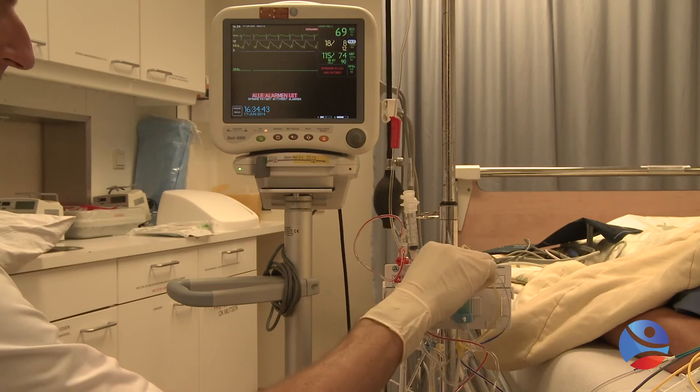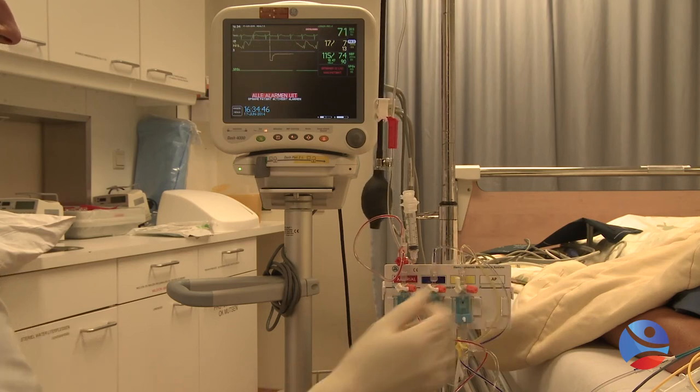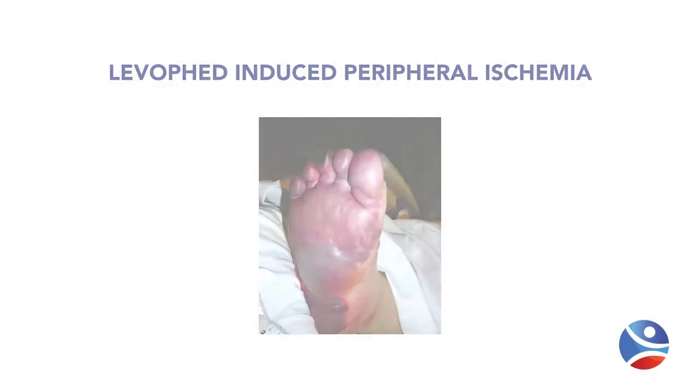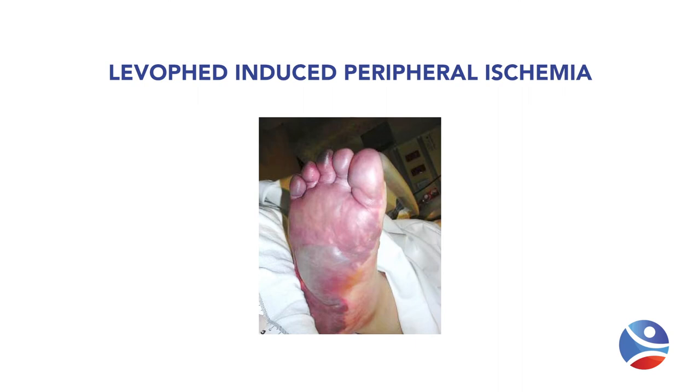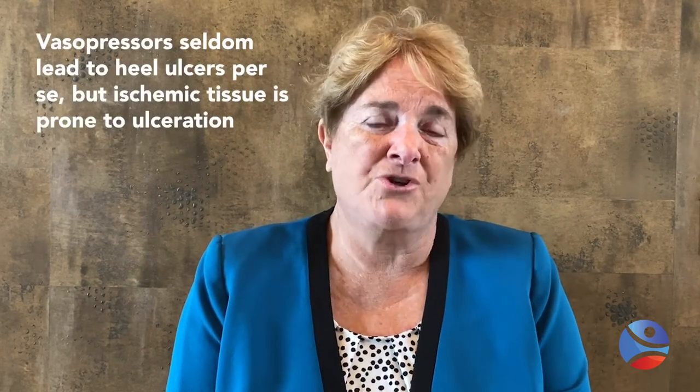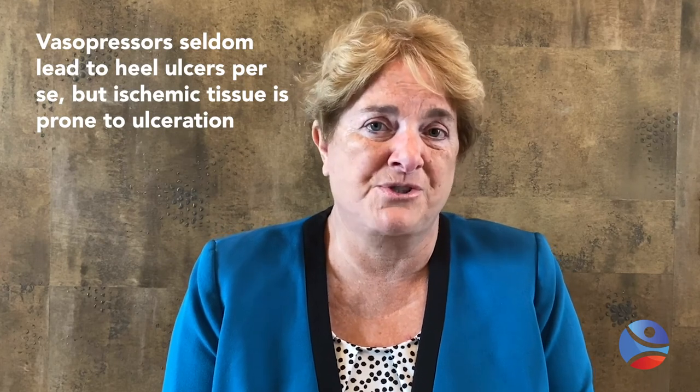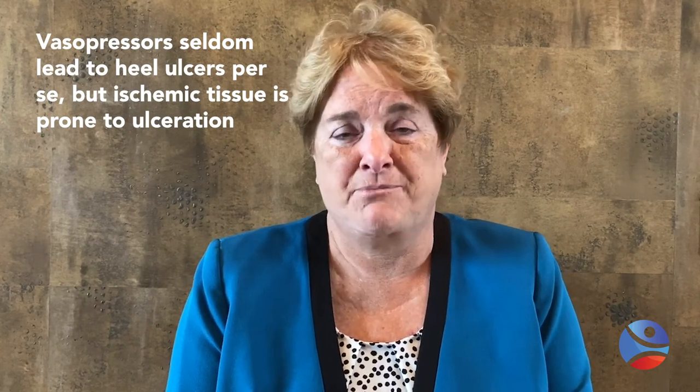One thing we often see in critical care patients is the use of vasopressors to raise blood pressure — levophed being the most common, with sepsis being the most common reason for ICU admission. So we see a lot of purple feet, just like in the photograph. That's not a deep tissue injury — that's ischemia that's gone on to blister. The patient shown went on to become fully necrotic. Vasopressors don't lead to heel ulcers per se, but ischemic tissue doesn't tolerate pressure, so be very cautious with those patients.